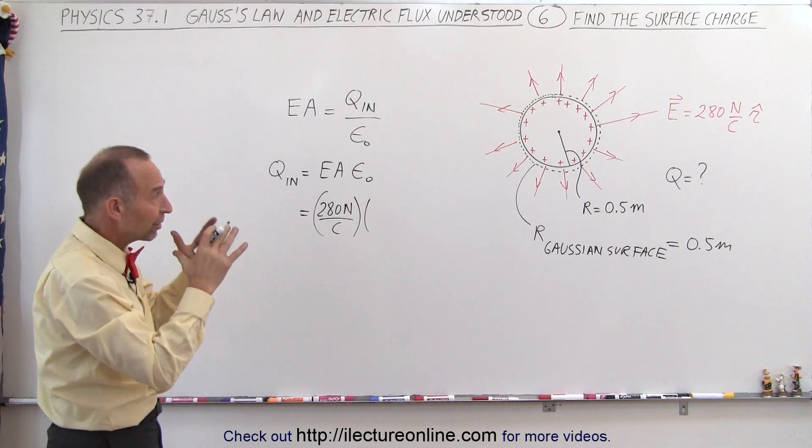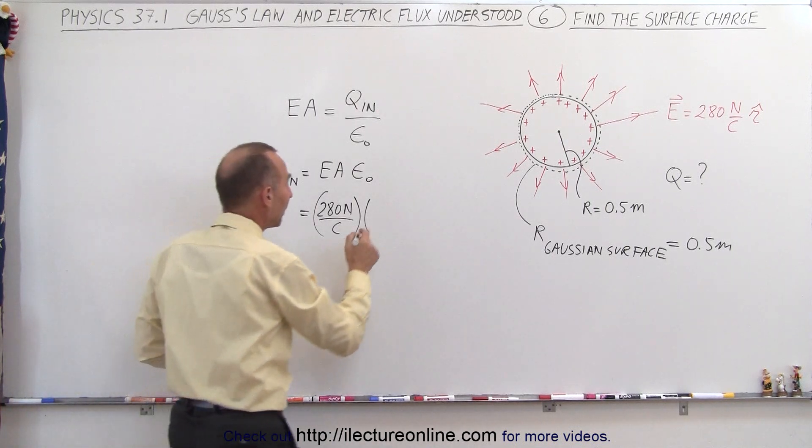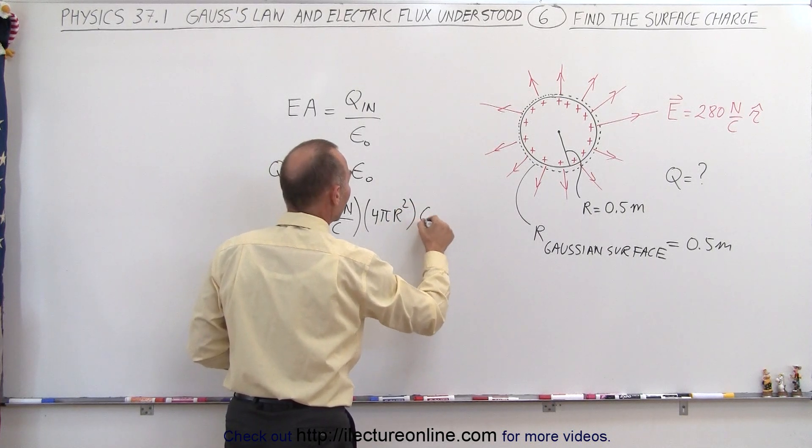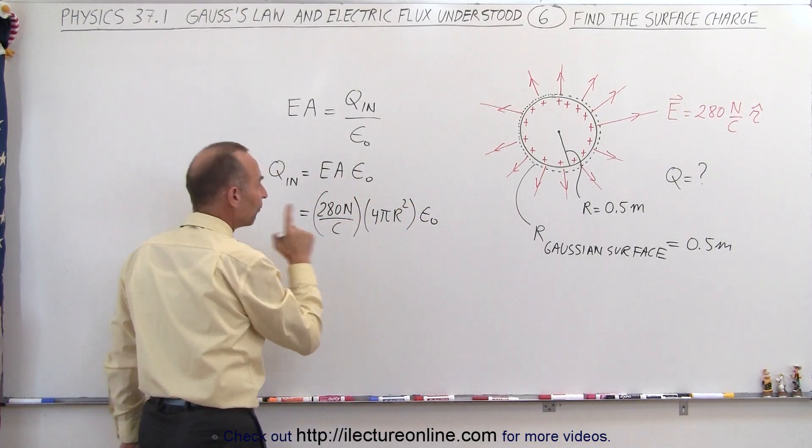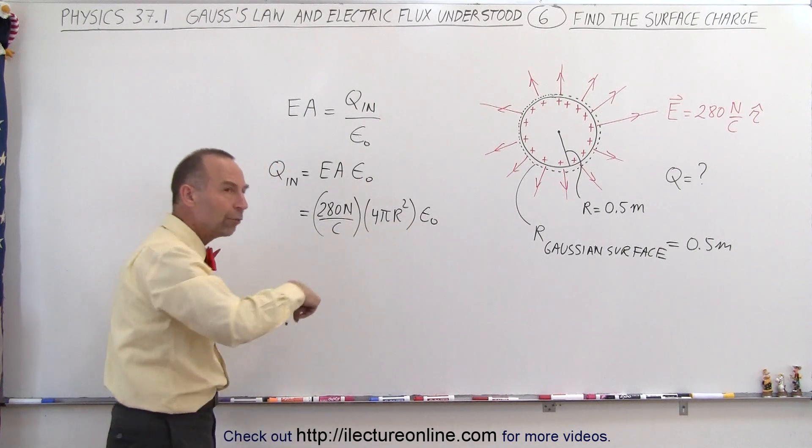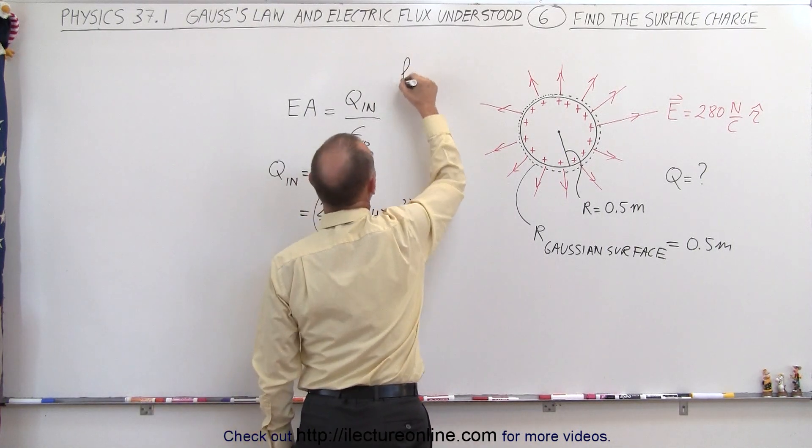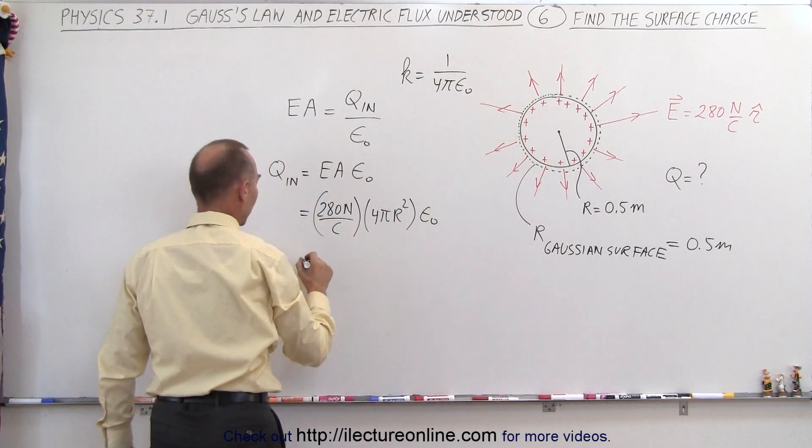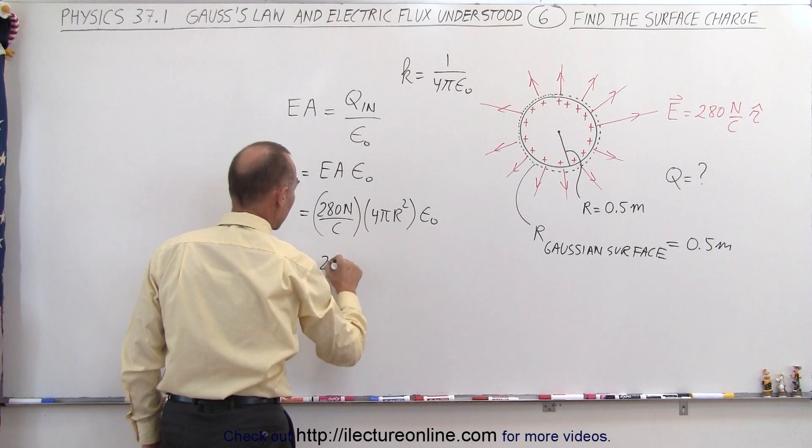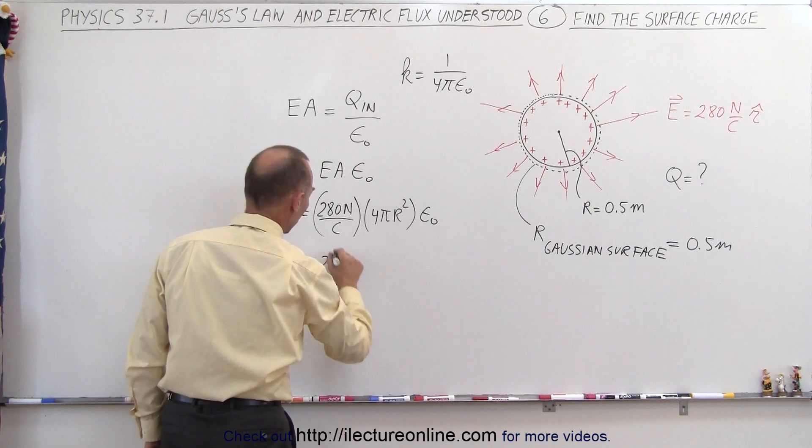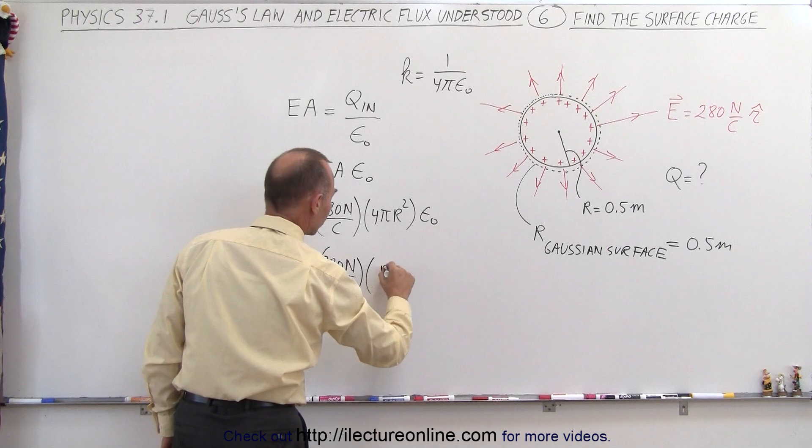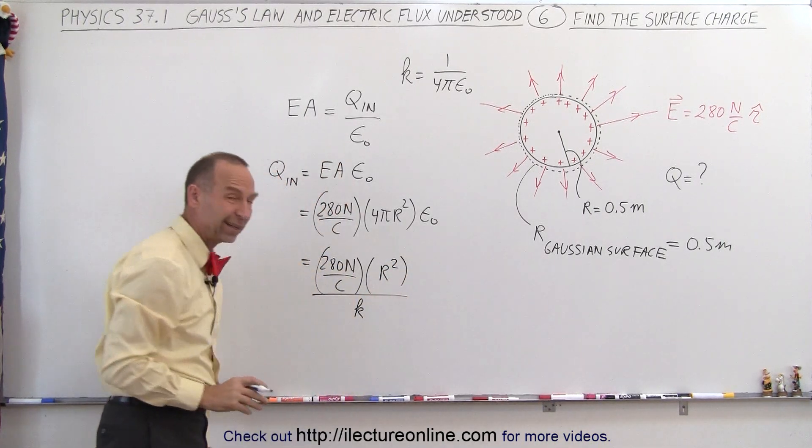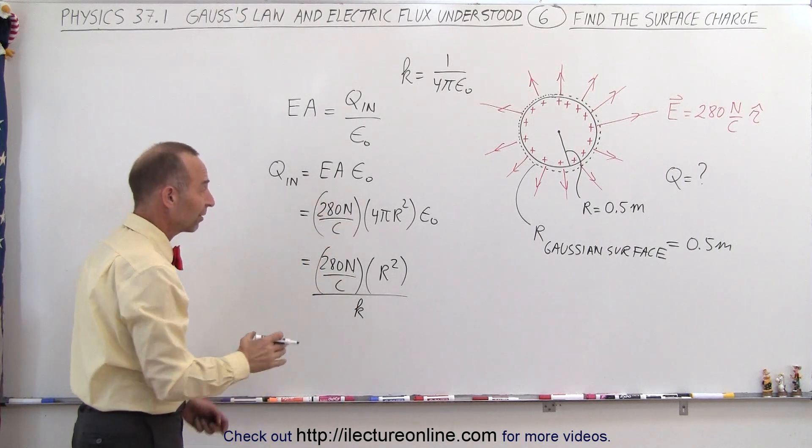Well, the area is the surface area of the Gaussian surface, and that happens to be 4π times the radius squared times epsilon nought. Now, 4π epsilon nought, that's equal to 1 over K, since K is equal to 1 over 4π epsilon nought. So we can actually write this as 280 newtons per coulomb times R squared divided by K. Actually, I got a little ahead of myself by already substituting the electric field strength, but hey, there you have it. I could have written it as E times R squared over K.